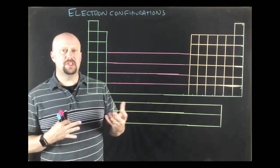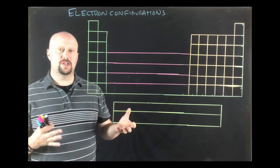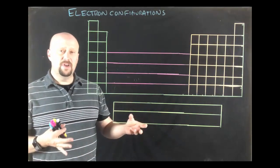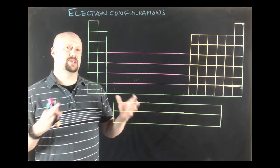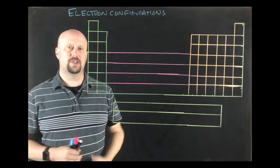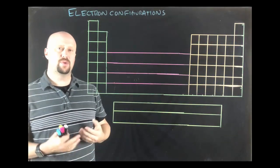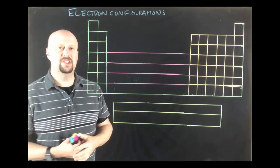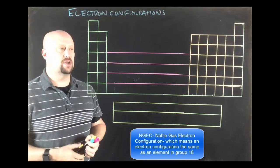So for instance when I say that everything revolves around electron configurations, everything, every reaction essentially is trying to get to this column as far as its electron configurations. Everything wants what we call a NGEC or a noble gas electron configuration.